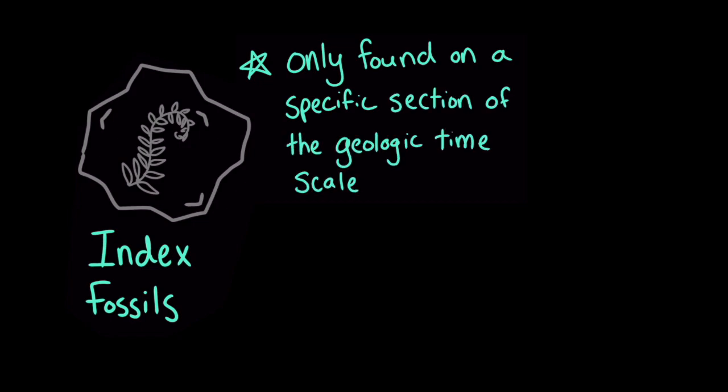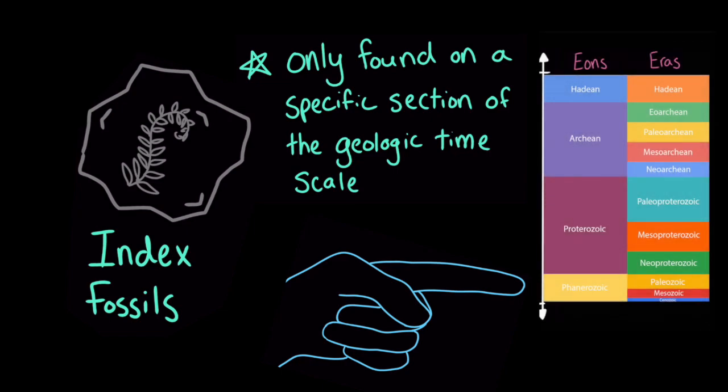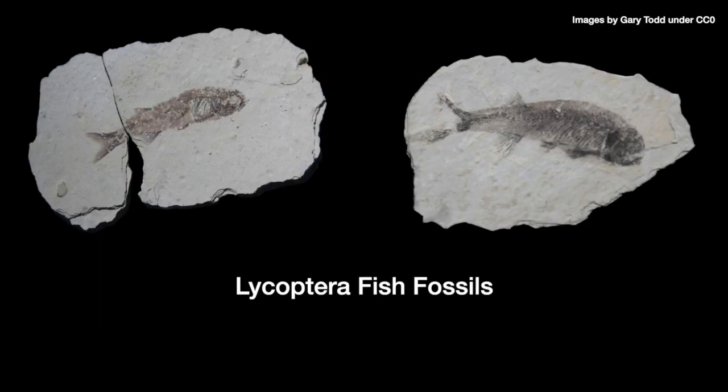I always remember what an index fossil is like this. Just like I use my index finger to point to give directions, index fossils can point to when on the geologic timescale a rock was formed. So if a geologist finds the same index fossil in rock layers in two different rocks, they know that those rock layers must have been formed around the same time period.